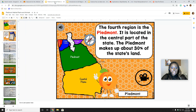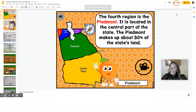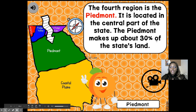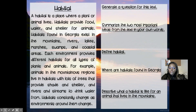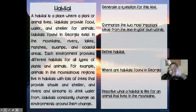Let's expand a little bit on the Piedmont and get specifically into what lives in the Piedmont. This is still all in alignment with our lesson standard, but now we're digging deeper. We're only going to talk about the Piedmont area — it's the fourth region, central, and 30% of the state. Now let's talk about the habitat. A habitat is a place where animals and plants live. Habitats provide food, water, and shelter for animals. Habitats found in Georgia exist in the mountains, rivers, lakes, marshes, swamps, and coastal areas. Each environment provides different habitats for all types of plants and animals. So you'll find different animals in the plateau, different animals in the coastal ridges, different animals here in the Piedmont — every place is different because every habitat and ecosystem is different.